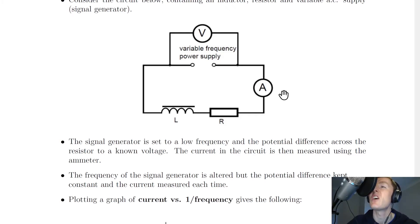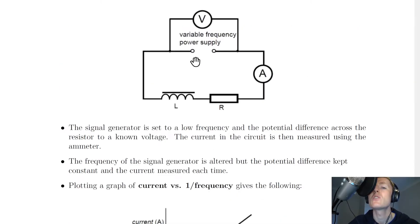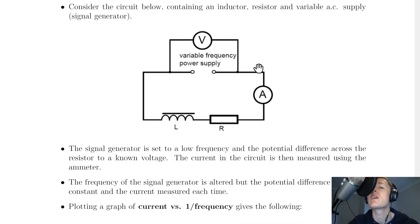However, this time we're using an inductor in place of a capacitor. So just like we did in that capacitor experiment, the frequency of the signal generator is altered, but the potential difference kept constant and the current measured each time. So as you increase the frequency values, you would note these down and then write down the corresponding current values. And the only reason you're measuring the voltage is to make sure that that stays constant.